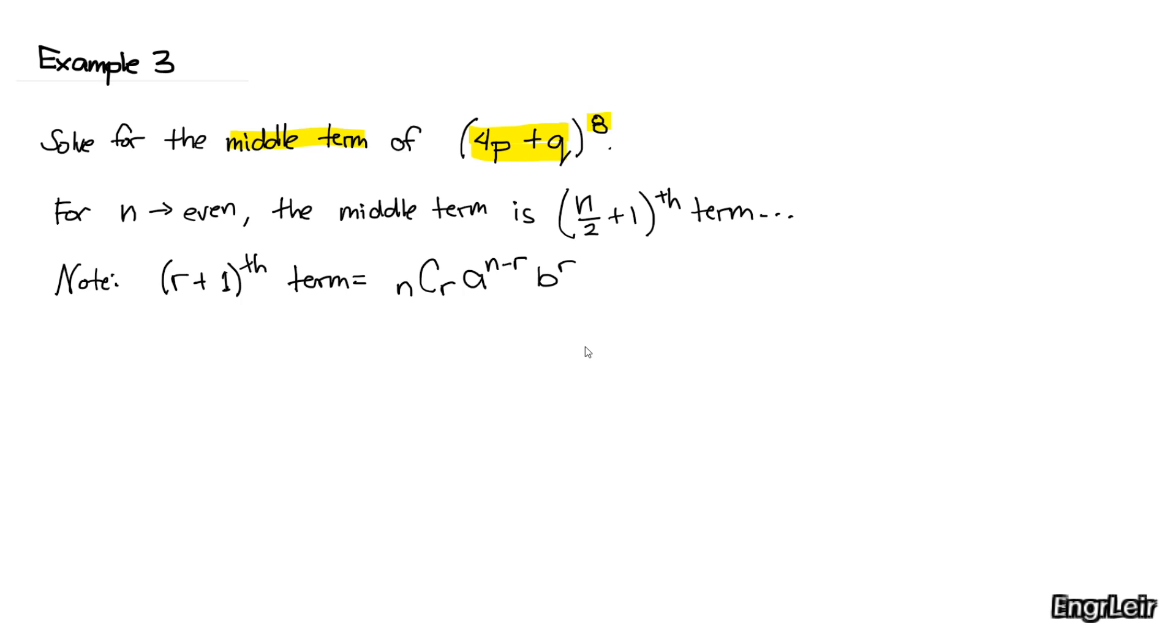Middle term - the expansion will only have a middle term if the degree you're raising the binomial to is even. So is 8 even? Of course it's even. And the middle term will be at n plus 1, n over 2 plus 1. Divide this, add 1, that's your middle term.